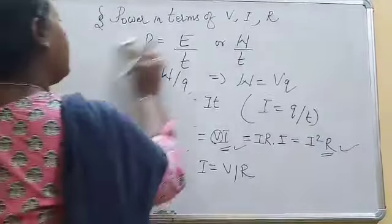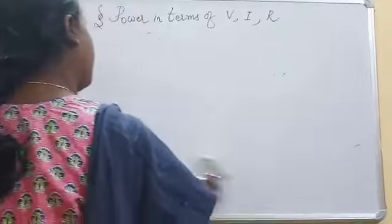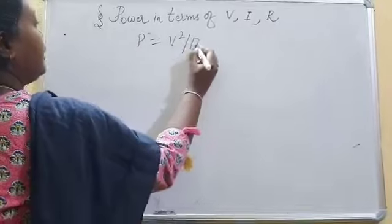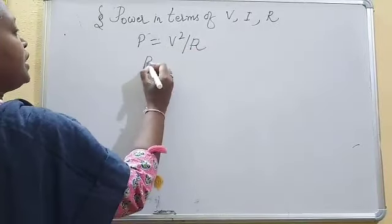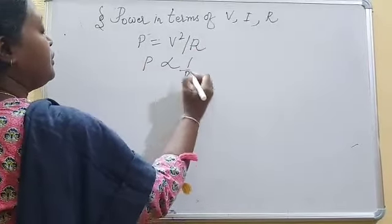From this, what we conclude is that power equals V square upon R, that is power is inversely proportional to R.